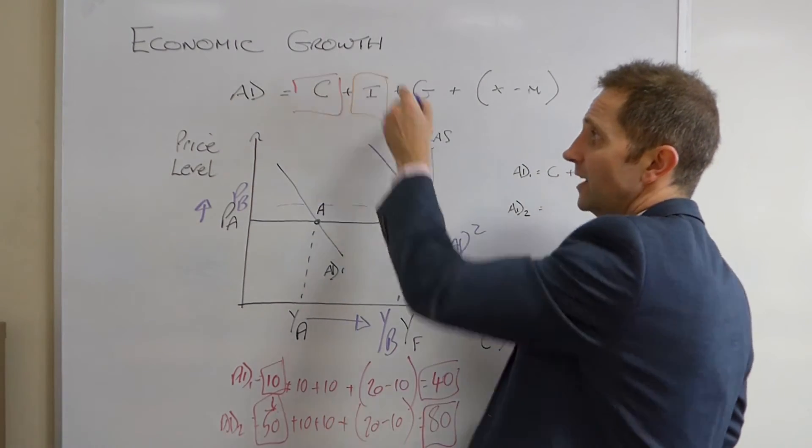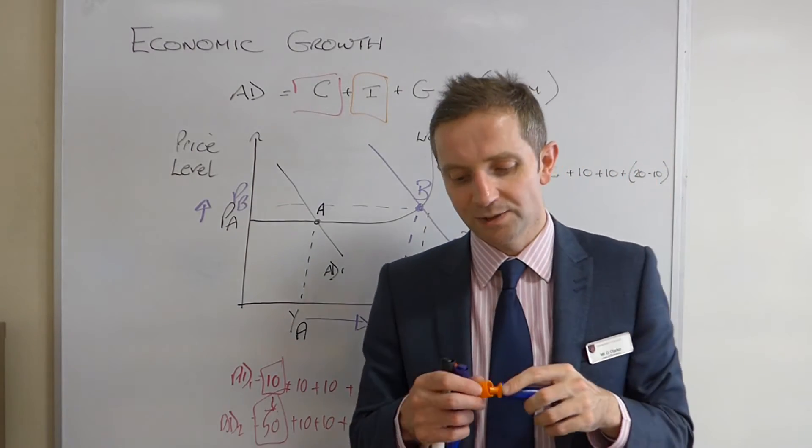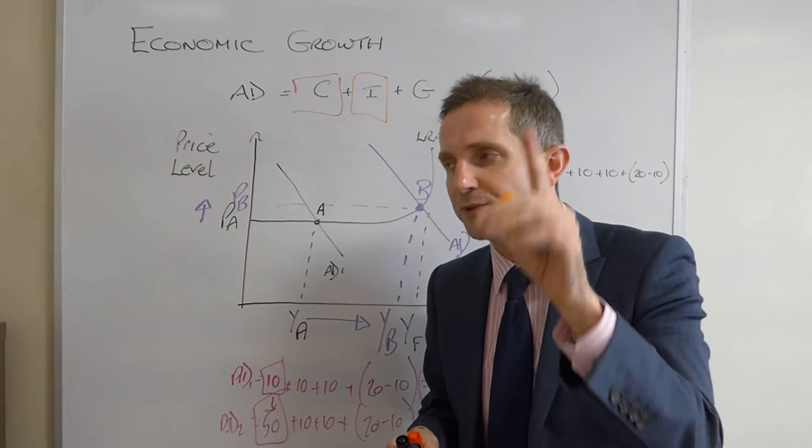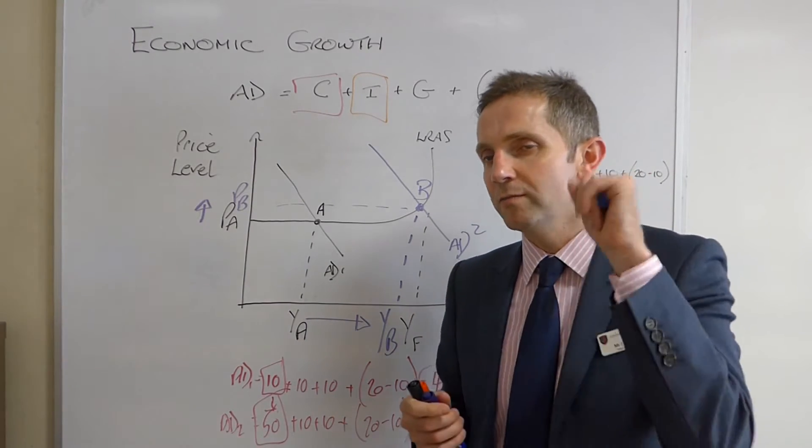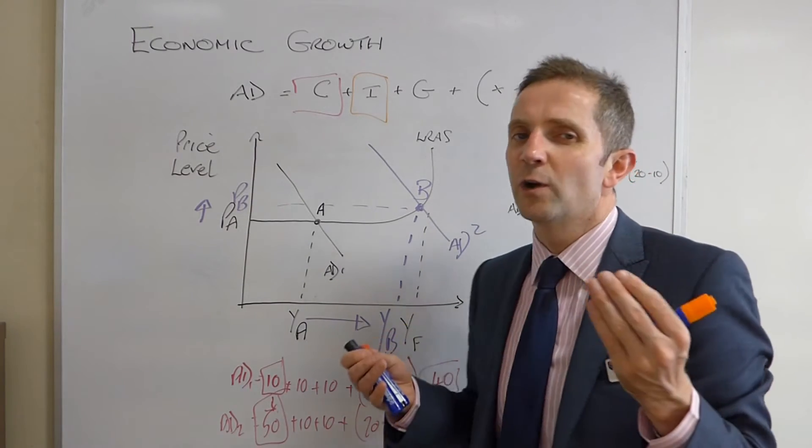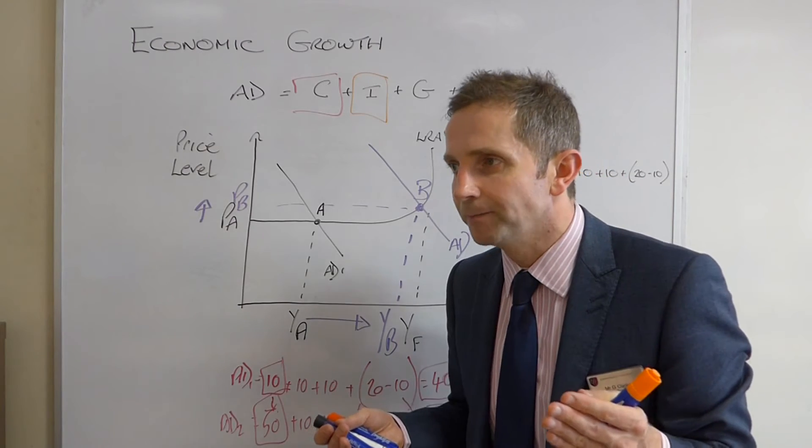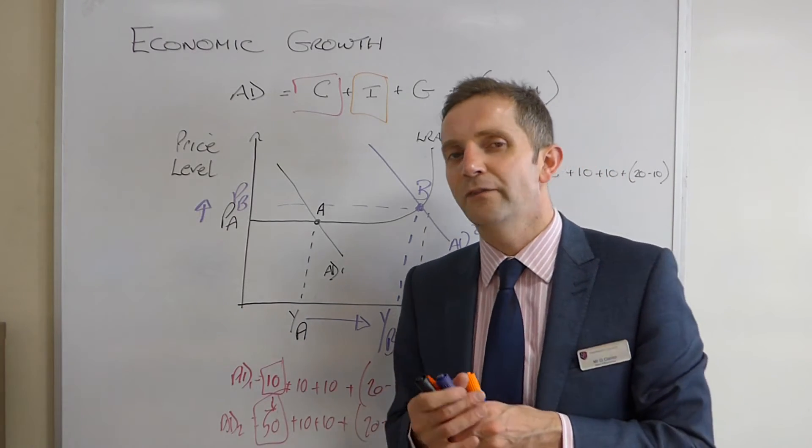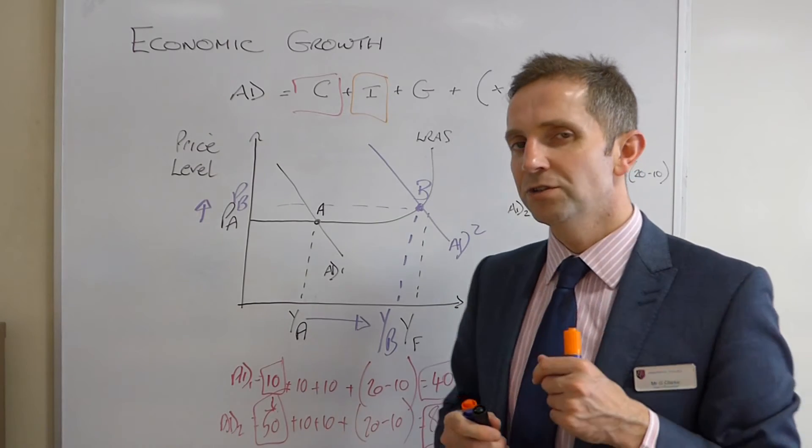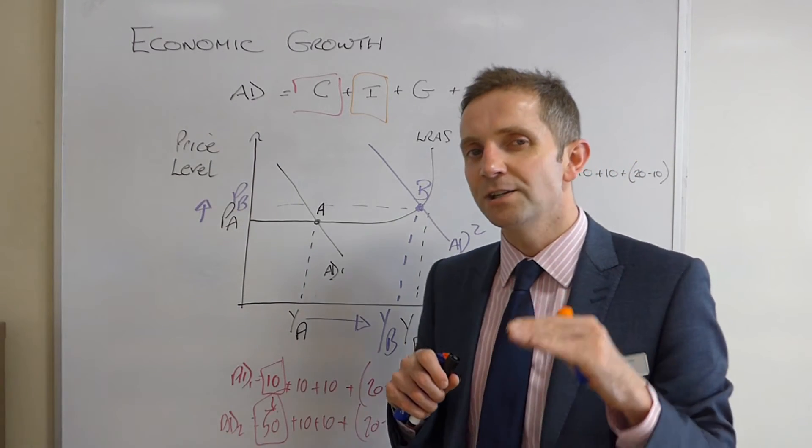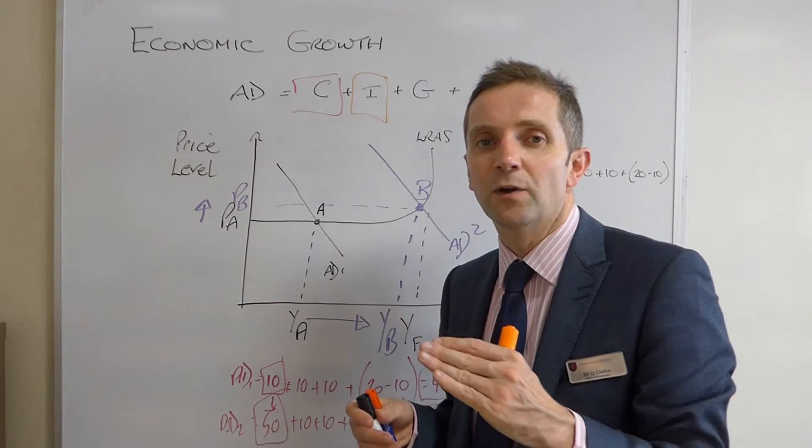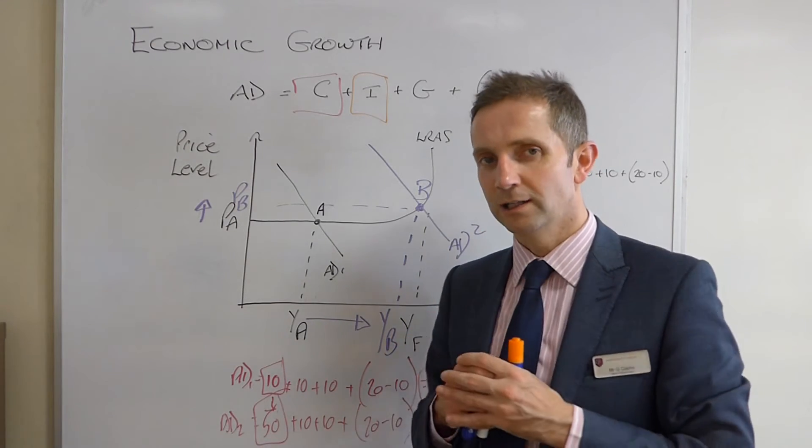What about I, investment? Remember what investment is. Buy firms on capital goods and machinery. So, what could the government do to help that? Well, what do firms like? They like certainty. So, the government, or the central bank, could make it very clear that they're going to maintain the rate of inflation in the economy at a nice, constant level. That gives firms certainty they're more likely to invest.